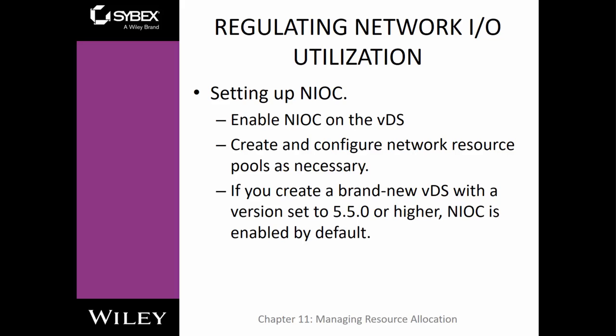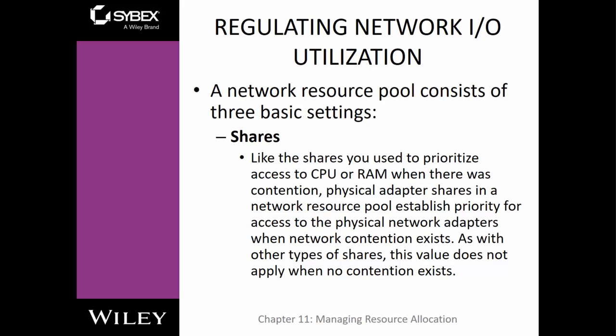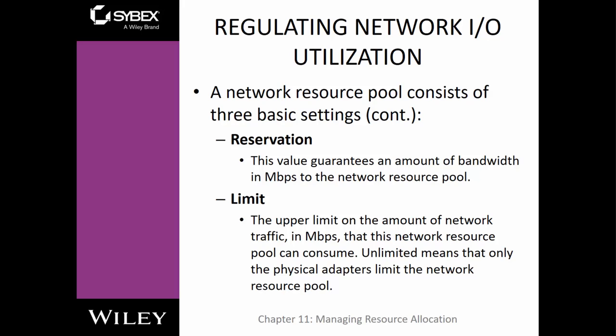Network resource pools typically have three basic settings — shares, reservations, and limits — just like other pools. Like shares for CPU and RAM, they prioritize access to specific resources when there is contention. The physical adapter shares a network resource pool, establishing that priority, and based on that priority they will allow or disallow connections. Reservations guarantee a specific amount of bandwidth, normally in megabits per second. Limits let you set maximums for bandwidth — normally it's set to unlimited, but you can set them.